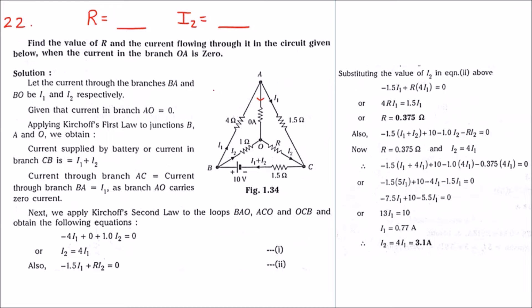We will indicate that the branch current of BA is i1 and BO is i2. Then we will use Kirchhoff's First Law, that is the Current Law. Applying this law to junctions B, A, and O: from CB the current is i1 plus i2, splitting to i1 in branch BA and i2 in branch BO. As there is no current flowing from A to O, i1 flows to branch AC, and O to C carries i2, summing back at branch CB.